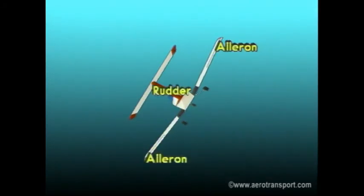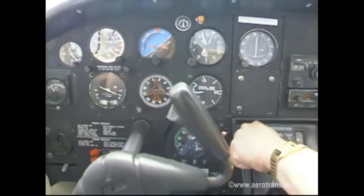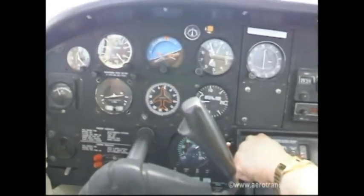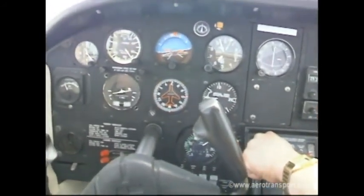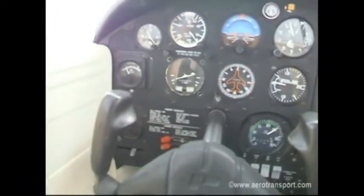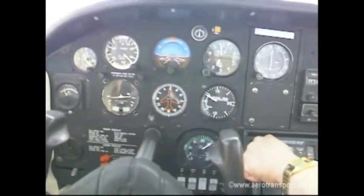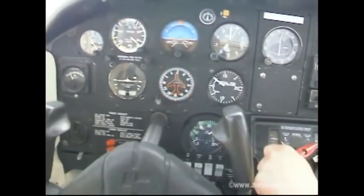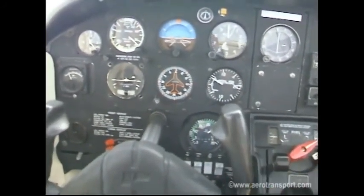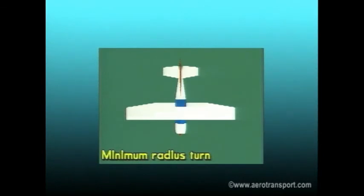The rudder is used to control any yaw that develops, and you will notice the elevator loses its effectiveness as the bank angle increases. To recover from a steep turn, follow the steps previously outlined for level turns. The only difference is that you must reduce the power simultaneously as you return to straight and level flight.